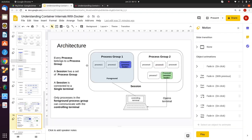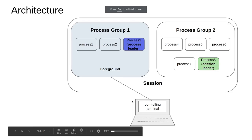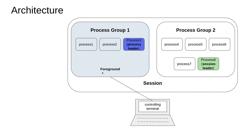Let's come back to our diagram. The controlling terminal will be associated with the foreground process group, as I explained through the terminal just a while back, and there can be multiple background process groups. The catch here is it is not necessary that the controlling terminal is created by a process belonging to the foreground. It is perfectly fine for a process group in the background to create the controlling terminal, and eventually relinquish control to another process in the foreground which becomes the leader.